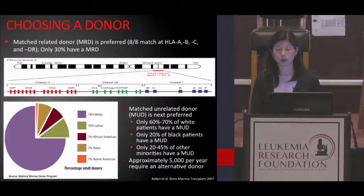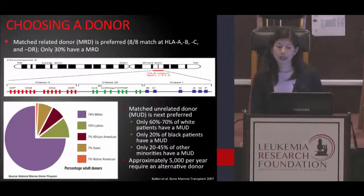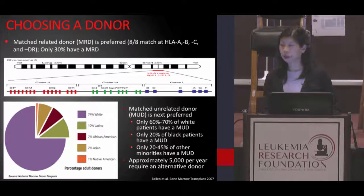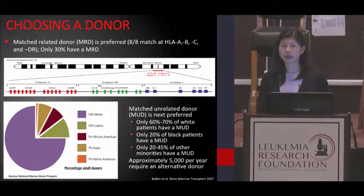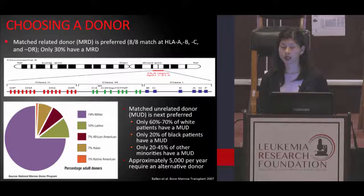Unfortunately, only about 30% of people have a matched sibling donor. In most cases, the next preferred donor choice is a matched unrelated donor. This is also someone who is matched 8 out of 8, but is typically found through one of the worldwide registries. Caucasians have the highest chance of finding a match at around 60% to 70%, while most minorities have about a 20% to 40% chance of finding a matched unrelated donor.